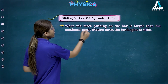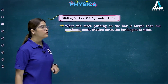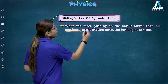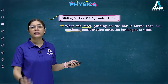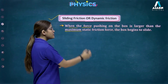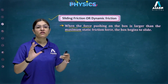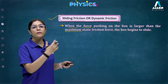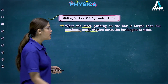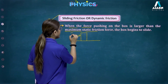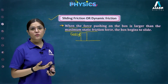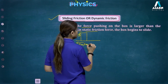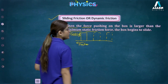Sliding friction and dynamic friction are the same thing. When the force pushing on the box is larger than the maximum static friction, the box begins to slide. For example, if maximum static friction is 5 N and you apply 6 N, the box starts sliding and comes into motion. The friction acting at that point is sliding friction.